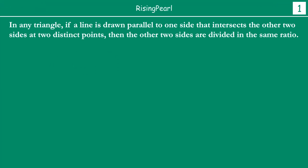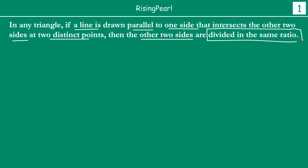As you recall in the last video, episode number 6, we talked about a very, very important theorem, which is basically the opposite of this one. In any triangle, if a line is drawn parallel to one side that intersects the other two sides at two distinct points, then the other two sides are divided in the same ratio. This is what we learnt in webisode number 6.